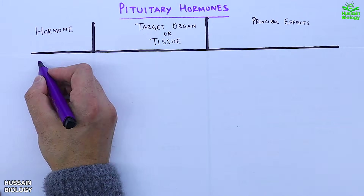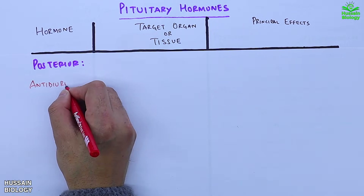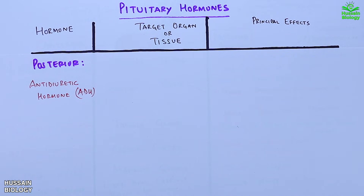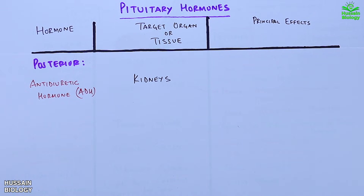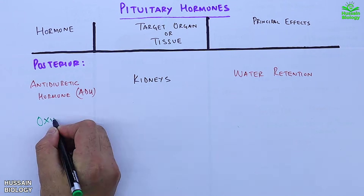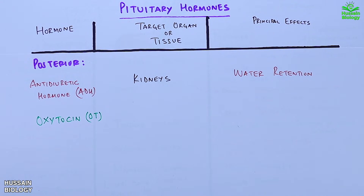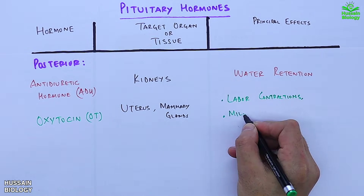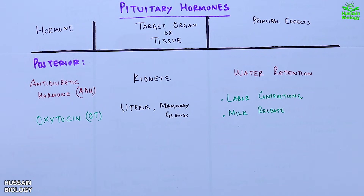Moving to the posterior pituitary hormones: the first is antidiuretic hormone (ADH), also called vasopressin. It targets the kidneys and its principal effect is water retention. The second hormone is oxytocin (OT). It targets the uterus and mammary glands. Its principal effects include labor contractions, milk release, sexual affection, mother-infant bonding, and sperm transport when sperm enters the vagina.